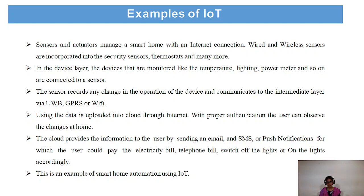Sensors and actuators manage the smart home with an internet connection. Wired or wireless sensors can include security sensors, thermostats, and many more. In the device layer, connected devices monitor temperature, lighting, power meters, and so on. The sensor records any changes and communicates them to the intermediate layer via GPRS, Wi-Fi, etc. This data is uploaded to the cloud through the Internet with proper authentication. The cloud provides information to the user through emails, SMS, or push notifications, enabling actions like paying bills or switching off lights. This is an example of smart home automation using IoT.